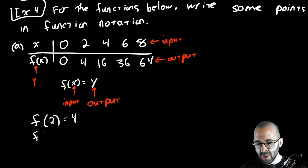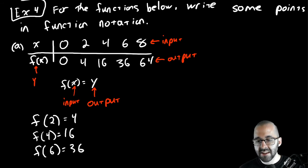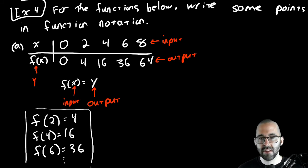So f of 2 equals 4 is what we write. Again, 2 is the input, the x. 4 is the output, the y. And you can do this with more of them. f of 4 equals 16, you could do f of 6 equals 36, and so on. And there we go, that's just function notation. Take inputs to outputs. Let's actually leave that up here. Let's do this for another example too.